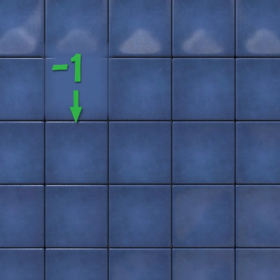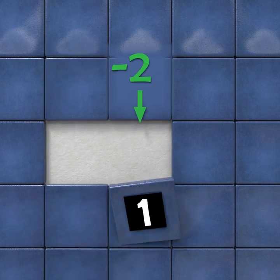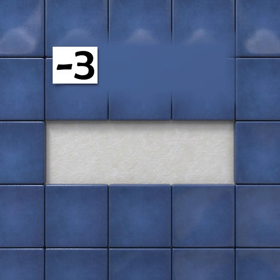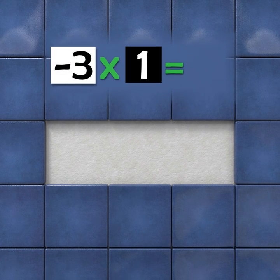As opposed to adding on more squares, we could also repeatedly take them away. And in doing so, create a growing hole. Removing a square three times could be described as negative 3 times 1, which gives us negative 3.